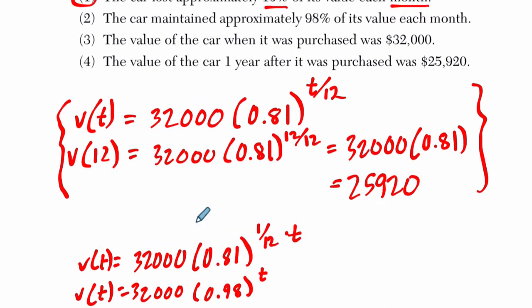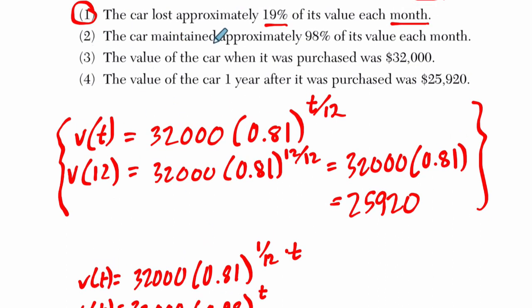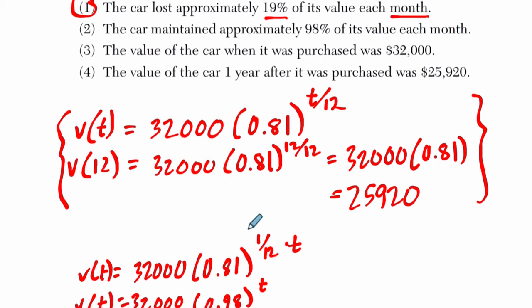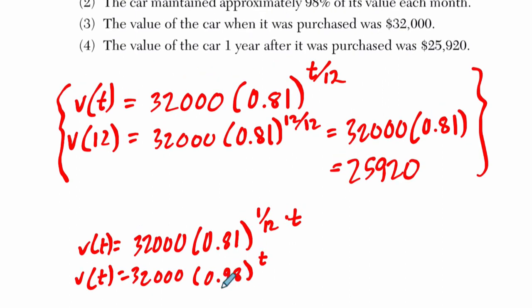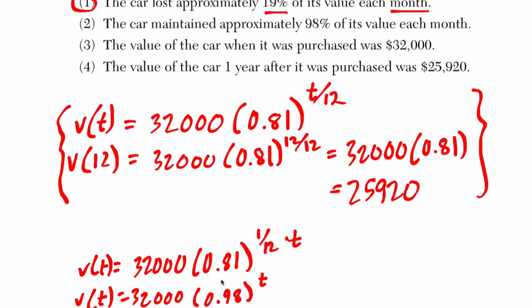So that helps us understand why they gave us choice two where the car maintained approximately 98% of its value each month. So that's a true statement, right? It's about 98% of its value each month is being maintained. That's what this number is right here. It's losing 2%, so it's maintaining 98%. Just like you could say it's maintaining 81% per year or losing 19%.